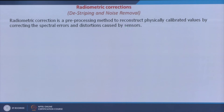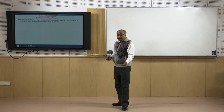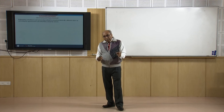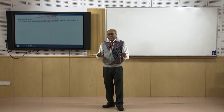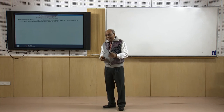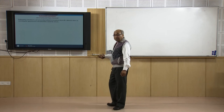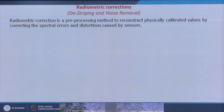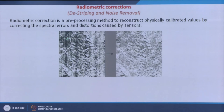Radiometric correction is a preprocessing method to reconstruct physically calibrated values, correcting spectral errors and distortions caused by sensors. If the CCDs in a linear array sensor are not perfectly calibrated, striping or lines appear in the image. To correct this, we need calibration data for individual CCDs, and once that correction is applied, the de-striping noise can be removed, producing a smooth image.